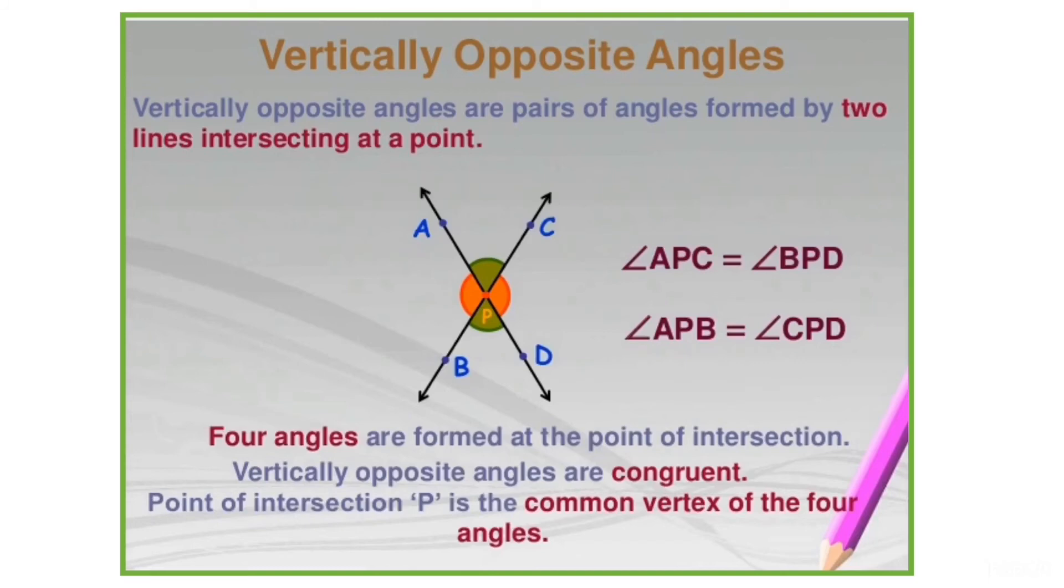The intersection point is the common vertex of the four angles. And always keep in mind, vertically opposite angles are congruent, means equal.